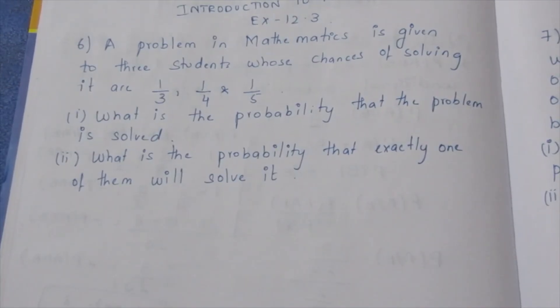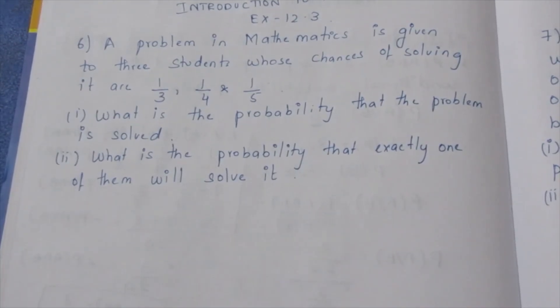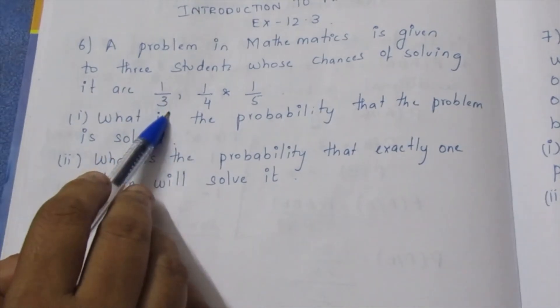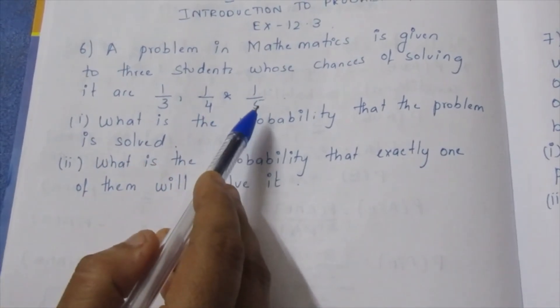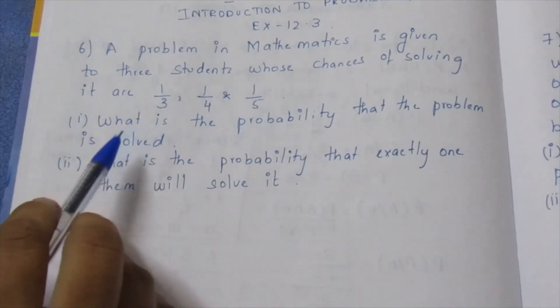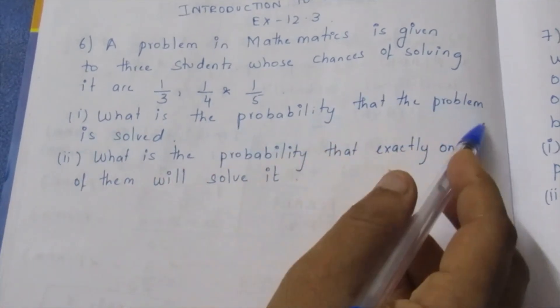So 3 students get a math problem. That means 1 by 3 is possible, 1 by 4 is possible, 1 by 5 is possible. What is the probability that the problem is solved?